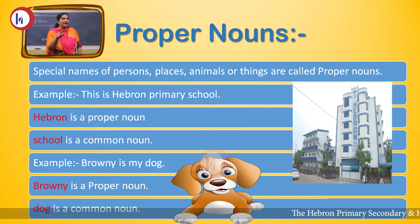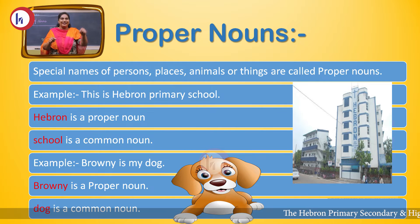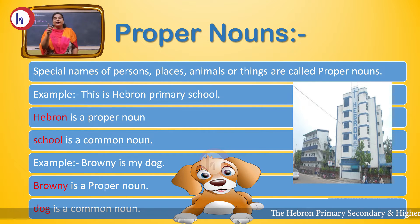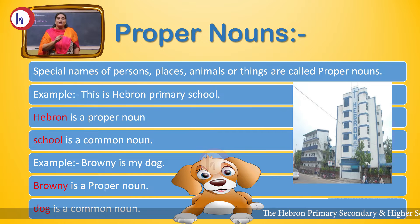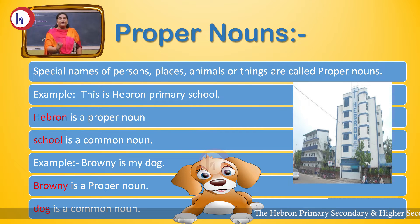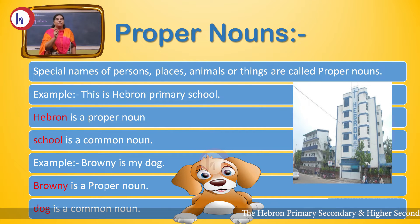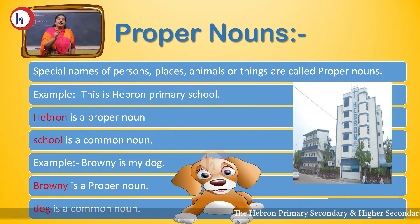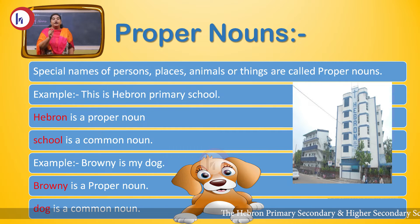You must have a name. We don't call you just 'a boy,' 'a girl,' 'a man.' Everyone has a name. That particular name, specified name, special name which is given to us by our parents — that is called a proper noun.